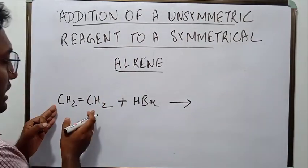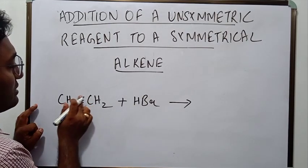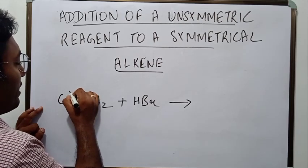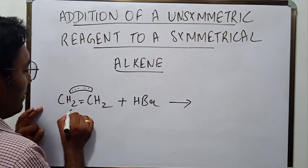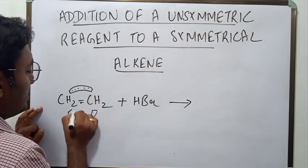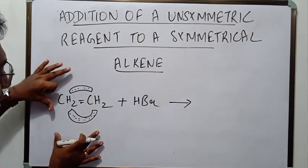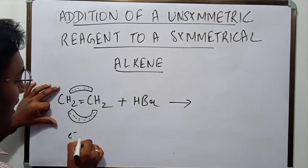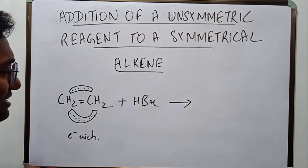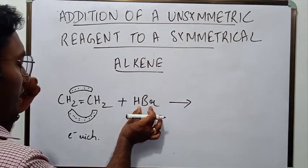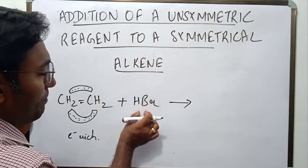Ethene — as you can see, there is one sigma bond in ethene, and the second bond in ethene is a pi bond. The pi bond exists as a pi cloud above and below the plane of the molecule. So this reactant is actually electron rich.